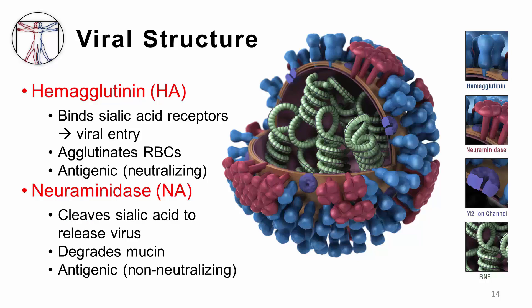Neuraminidase has two roles. First, neuraminidase cleaves sialic acid, which is critical for the release of progeny virus from the infected cell. As viruses are assembled, they bud out of the host cell membrane, but the new virion's hemagglutinin is bound to the host cell's receptors until cleaved by neuraminidase. Afterwards, the virion escapes to infect a new cell. The other role of neuraminidase is to degrade the protective mucus layer of the respiratory epithelial tract, enhancing the ability of the virus to reach these cells.